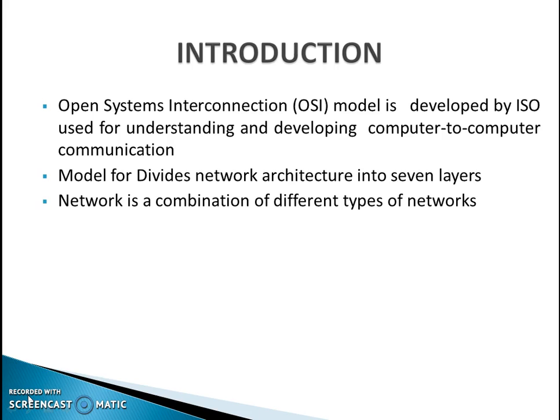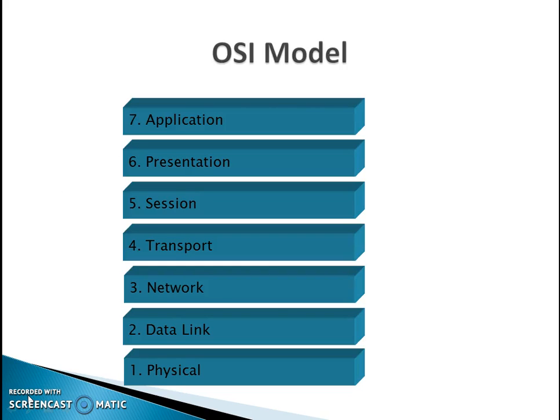Now a network is a combination of different types of networks. Before going into details of networking devices, let's have a quick recap of the OSI model. It consists of 7 layers: layer 1, the lowest, is the physical layer; layer 2 is the data link layer; layer 3 is the network layer; layer 4 is the transport layer; layer 5 is the sessions layer; layer 6 is the presentation layer; and the last layer is the application layer.